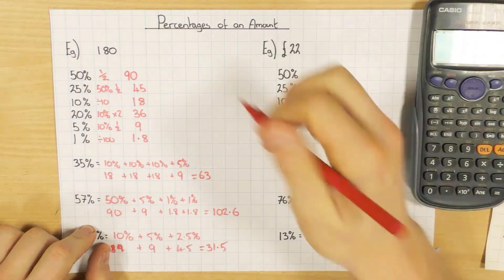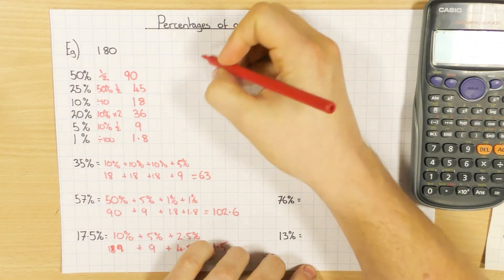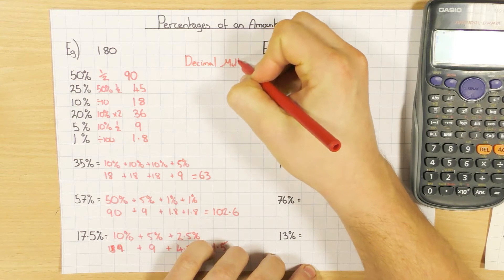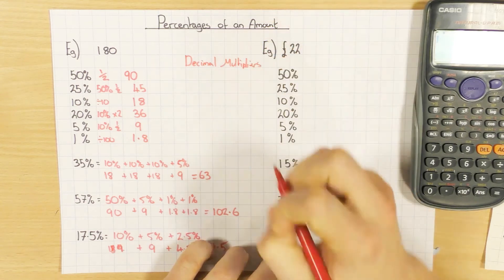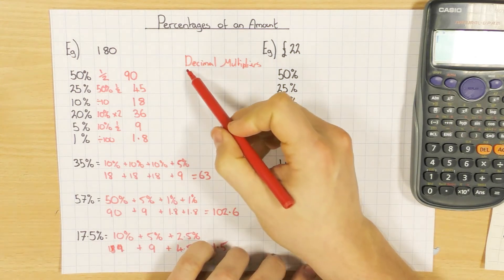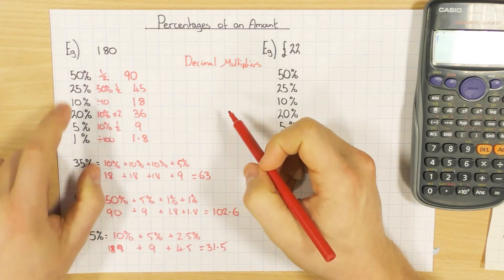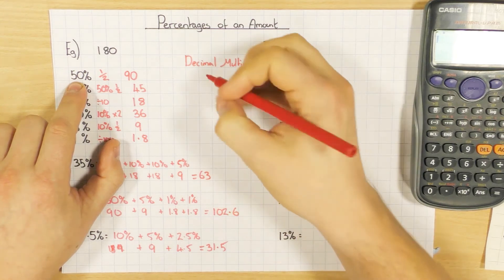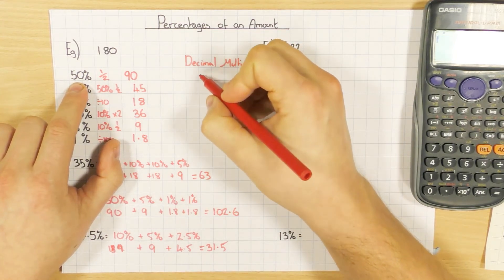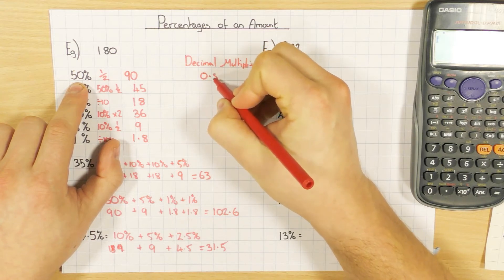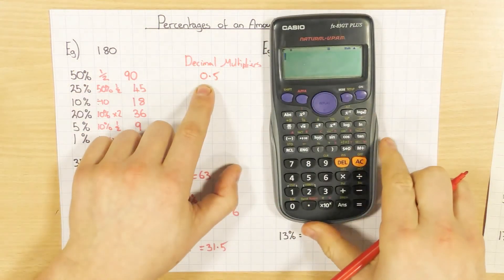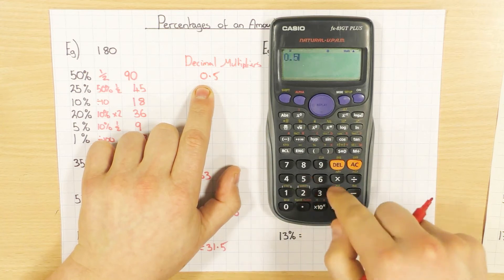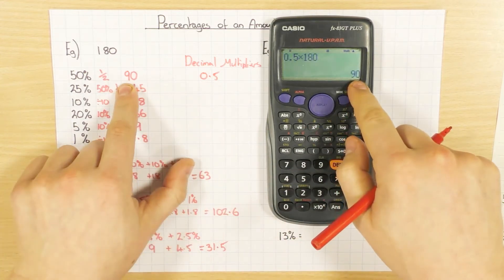I do just want to make a quick note on how you do decimal multipliers. So decimal multipliers are exactly what it is—it's a decimal that you multiply by 180 to find out 50% or 25% or whatever. Really easy. Whatever the percentage is, convert it to a decimal. So to do that, all we do is divide by 100. So 50 divided by 100 is 0.5, and that's going to be your multiplier. So to find out 50%, you can use your decimal multiplier, which is 0.5, times by 180, and you get the same answer, 90.